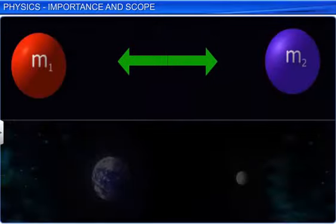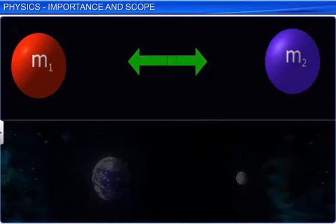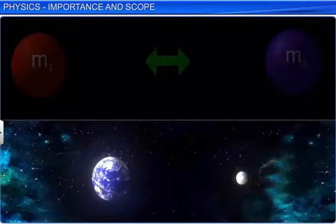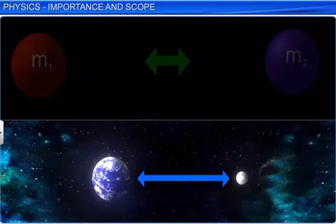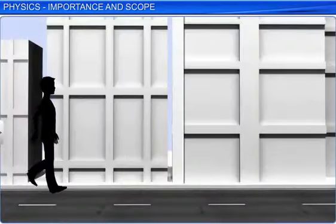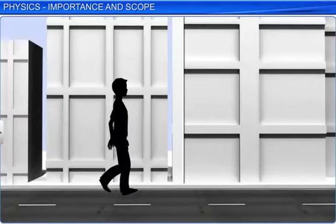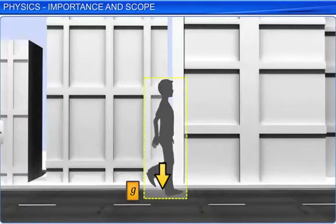The gravitational force is the force of mutual attraction between any two objects by virtue of their masses. It is a universal force meaning all objects in the universe exert a gravitational force on each other. We are able to stand or walk due to earth's gravitational force exerted on us by the earth.